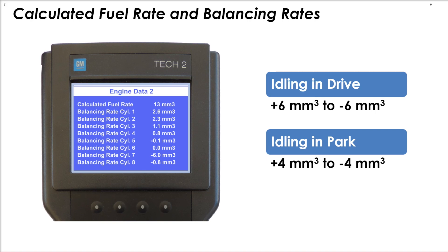According to GM, balancing rates are okay if they are from plus six cubic millimeters to minus six cubic millimeters idling in drive, or from plus four cubic millimeters to minus four cubic millimeters in park.